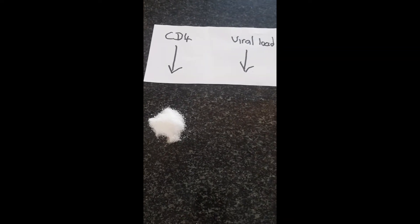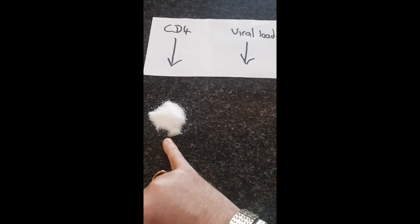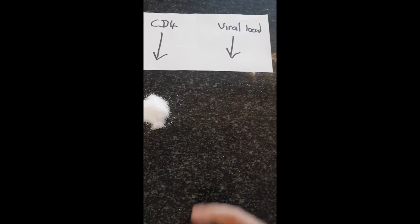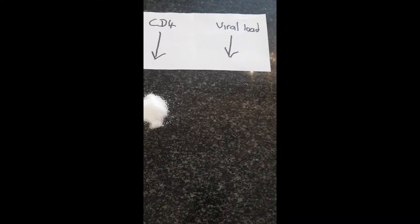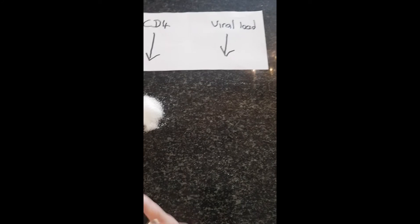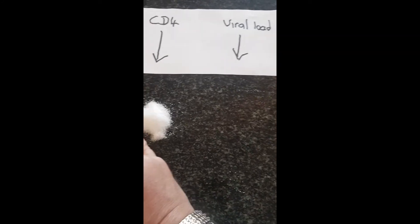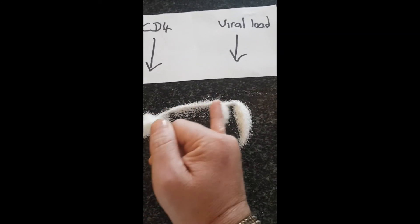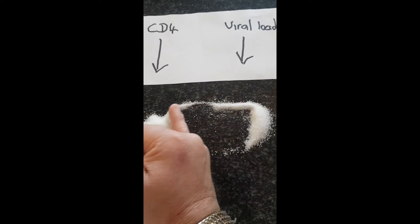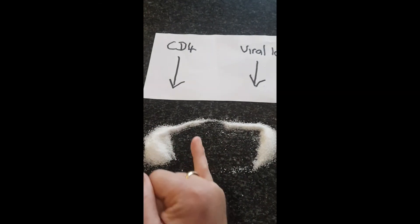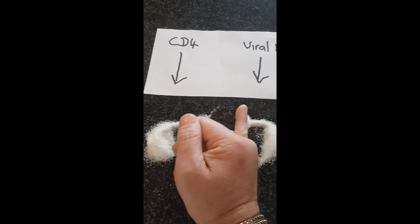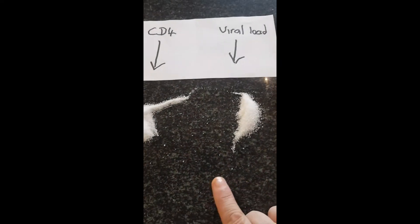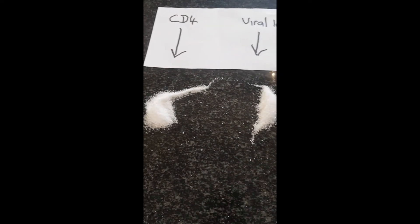If you are HIV negative, all the blood is going to stay in this pile and your viral load is zero. If you are HIV positive, some of these cells are going to be shifted over into the viral load pile.